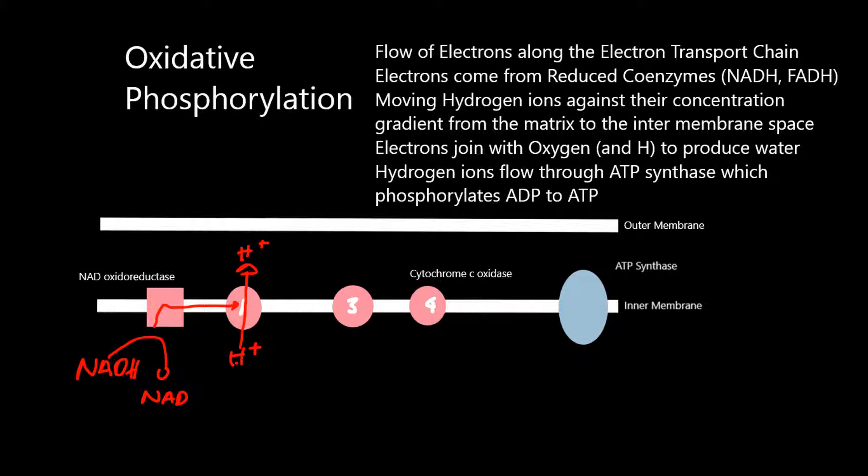The electron then gets passed on to complex 3, and then more hydrogen ions are moved across the membrane. This requires energy because there are more hydrogen ions inside the intermembrane space than in the matrix, so they're being moved against their electrochemical gradient.